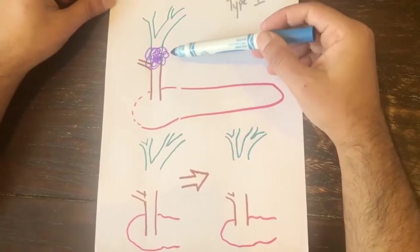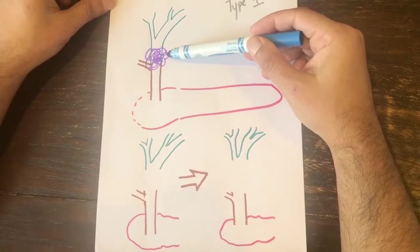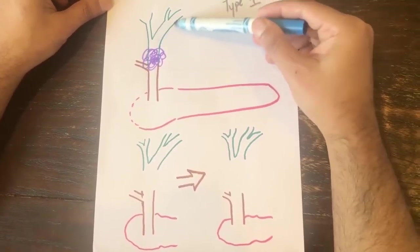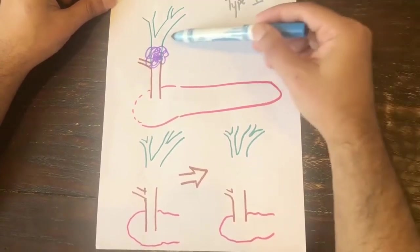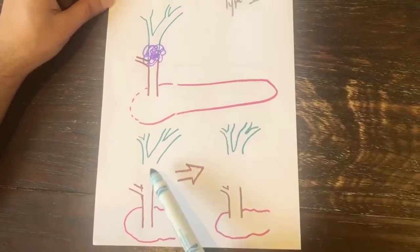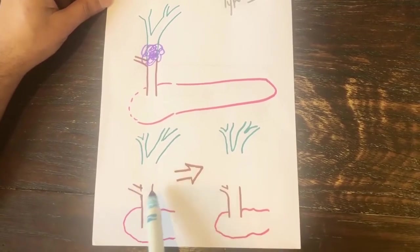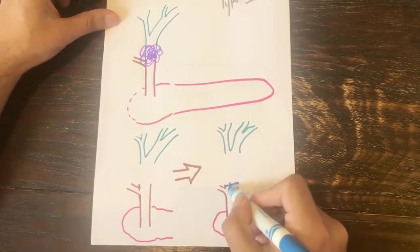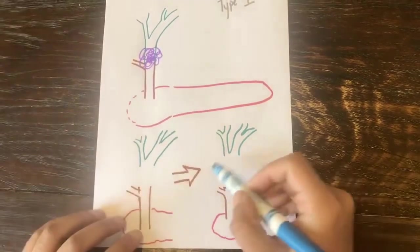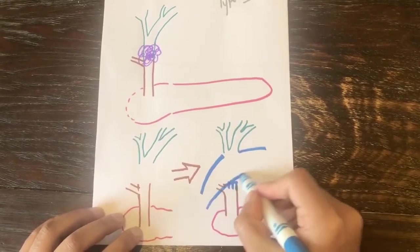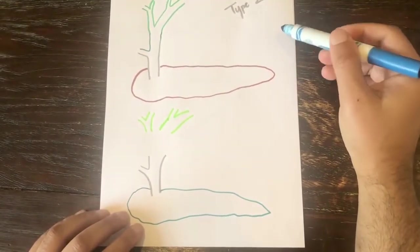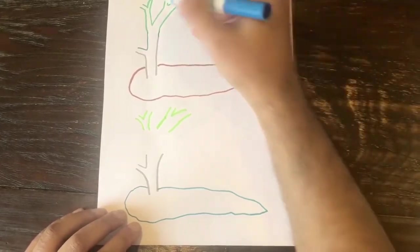In this scenario the tumor is in the common hepatic duct but does not involve the confluence of the right and the left hepatic duct. This is Type 1. You're going to remove the tumor and you're going to have a proximal and a distal end. Make sure the frozen sections are negative, then you're going to close the distal side, and for the proximal you are going to perform a hepatico-J anastomosis.